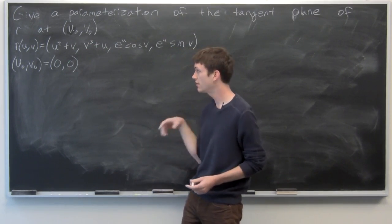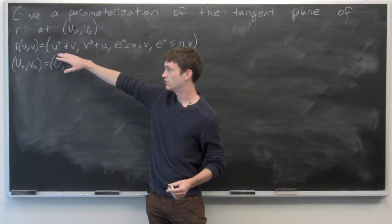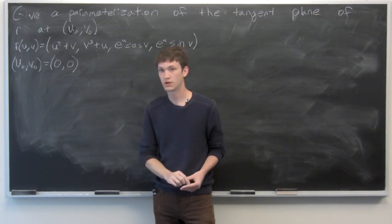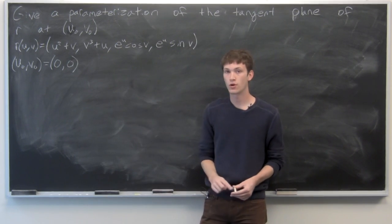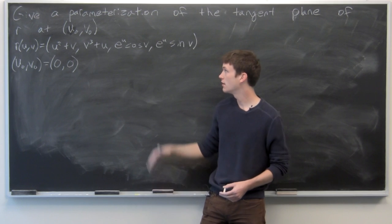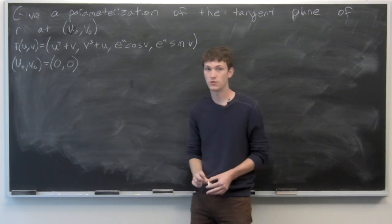We're given that r(u,v) equals: first component u²+v, second component v³+u, third component e^u cos(v), and fourth component e^u sin(v).